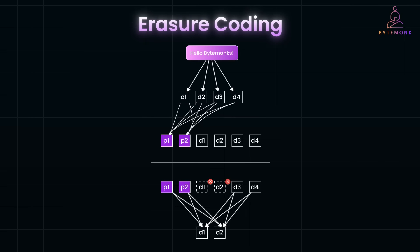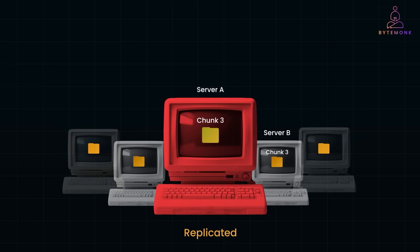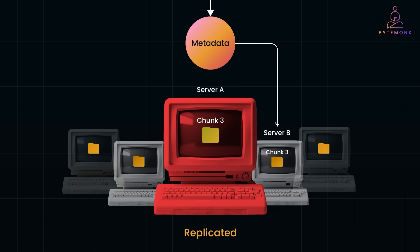There is still one more thing to figure out: how does the system know where to retrieve the missing chunk from? That is where the metadata store comes in. It keeps track of which servers store which file chunks. If a request comes in and a file server is down, the metadata service dynamically reroutes the request to another server that holds a copy or can reconstruct the missing data. A background recovery process may also automatically replicate or reconstruct lost chunks on a new healthy server.